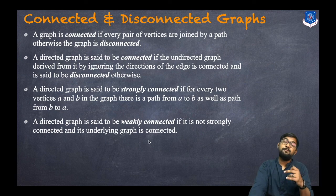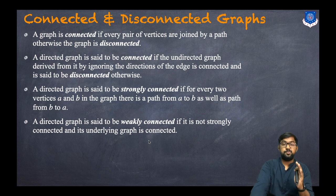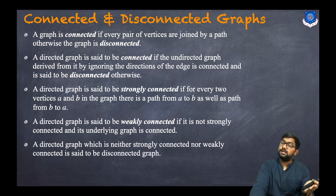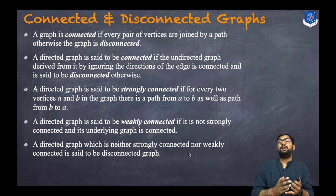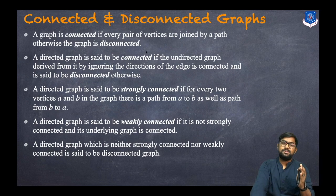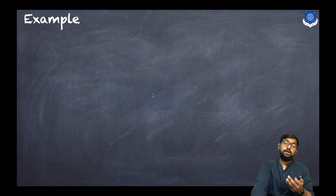A directed graph is said to be weakly connected if it is not a strongly connected graph but its underlying undirected graph is connected. A directed graph which is neither strongly connected nor weakly connected is called a disconnected graph. Also, if the underlying undirected graph obtained by ignoring directions is disconnected, then we can say it is a disconnected graph.